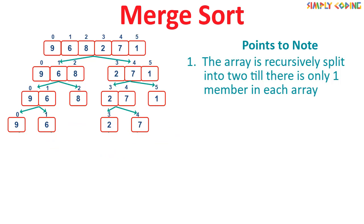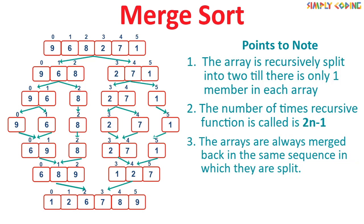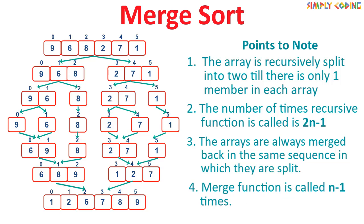A few points to note: the array is recursively split into two until there is only one member in each sub-array; the number of times the recursive function is called is 2n - 1; the arrays are always merged back in the same sequence in which they were split; and the merge function is called n - 1 times.